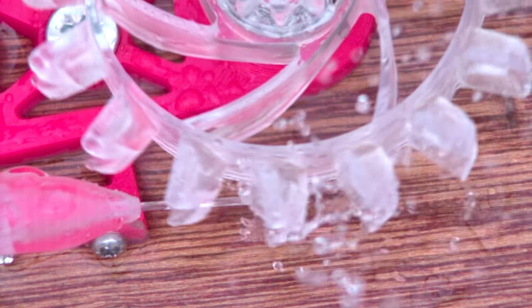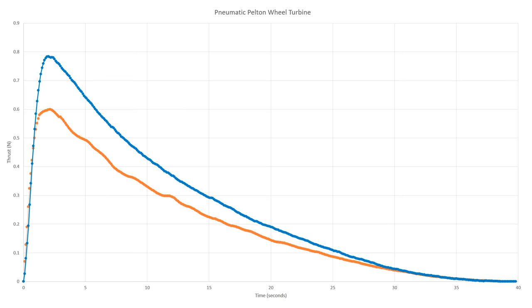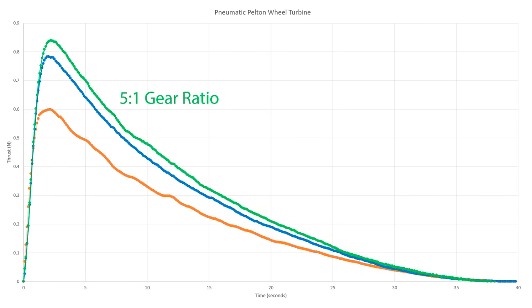I found the most efficient gear ratio for this specific pressure and propeller to be 5 to 1, producing a peak thrust of 0.83 newtons, which is a 38% improvement over the first version, but I still think there is a lot to be improved.